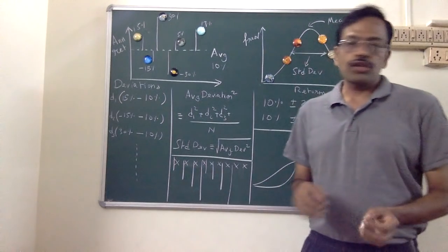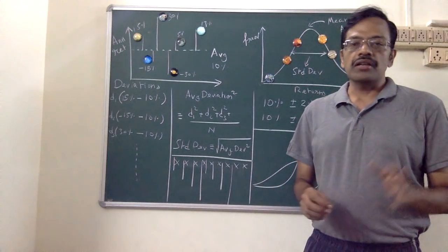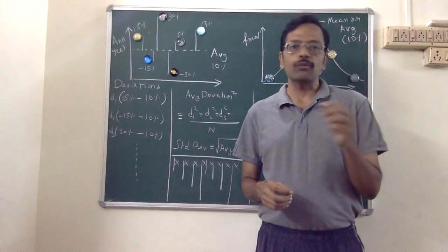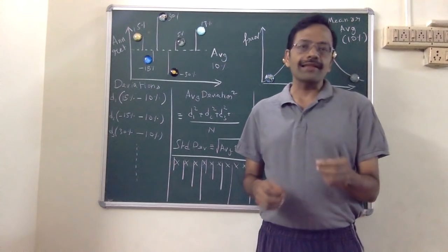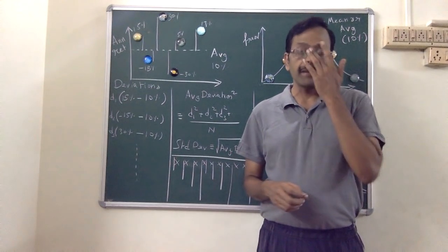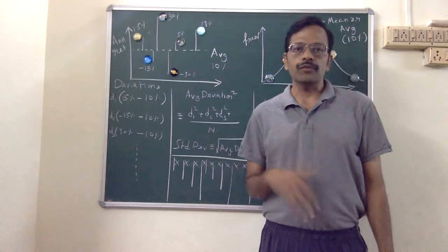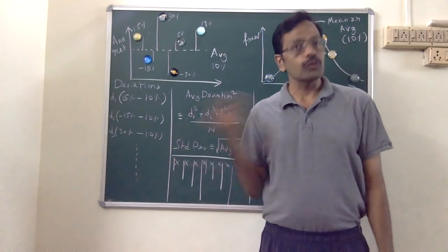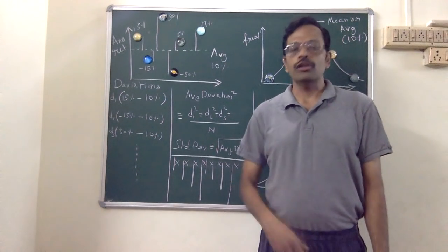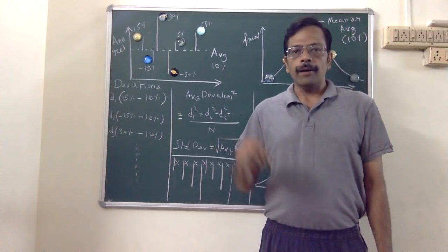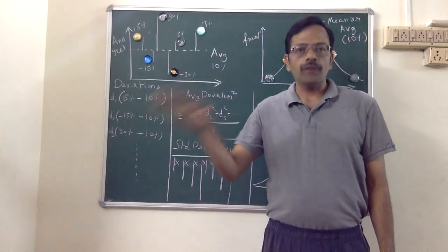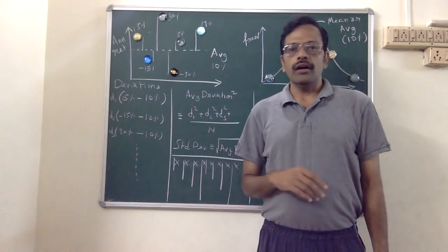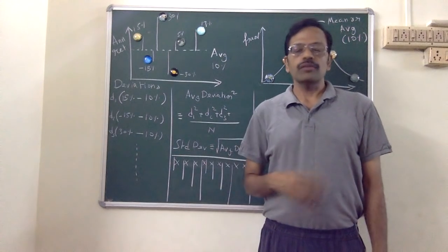Standard deviation is the simplest measure of investment volatility. You can easily classify investments using it — for example, in stocks you can classify as large cap, mid cap, or small cap using standard deviation. You can also classify stocks, bonds, and gold easily in terms of standard deviation.